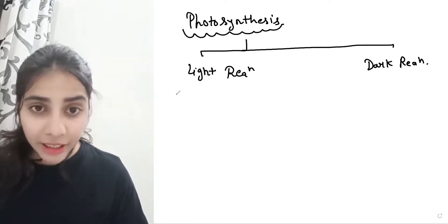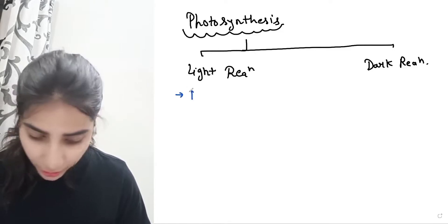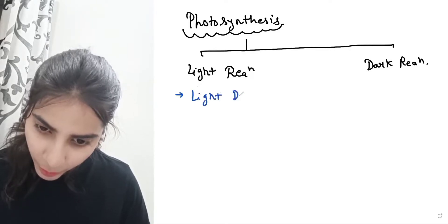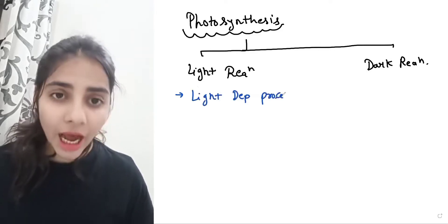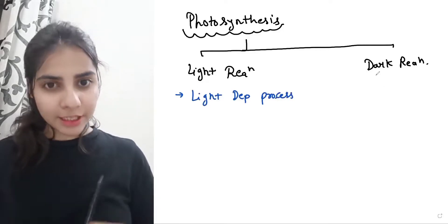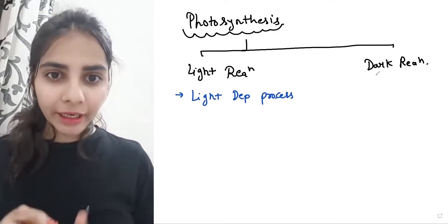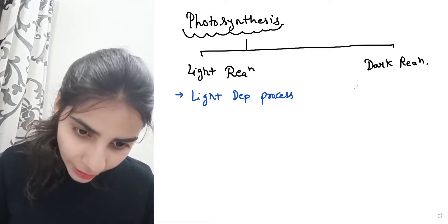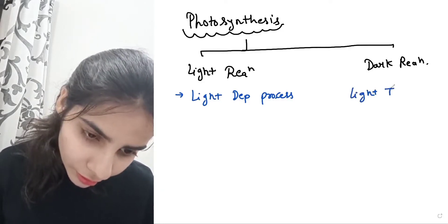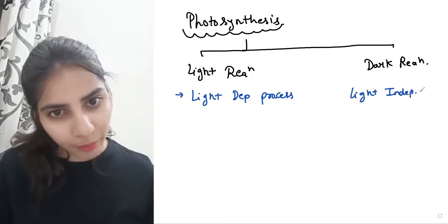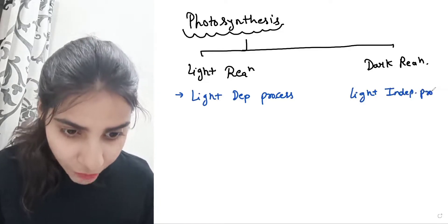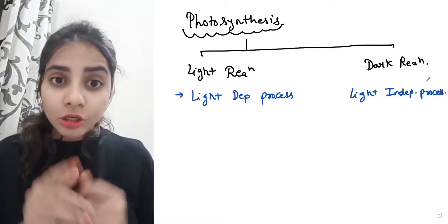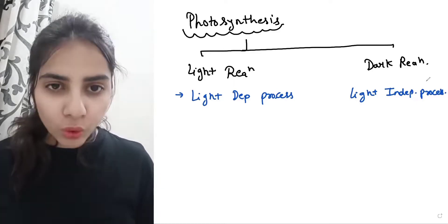The light reaction is a light dependent process. The dark reaction is independent of light — it is a light independent process. Now, in photosynthesis, the glucose formation — where does it happen? It happens in the dark reaction, not in the light reaction.